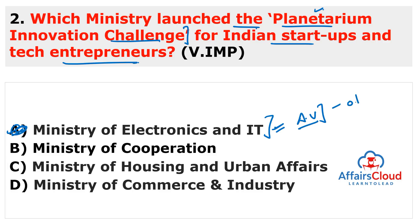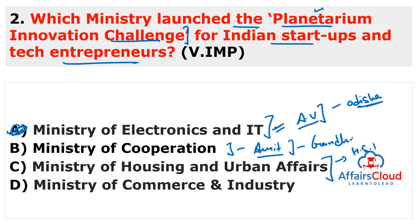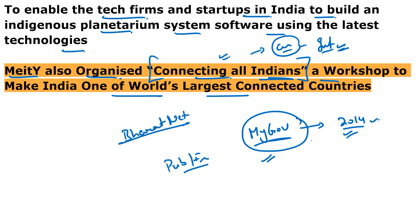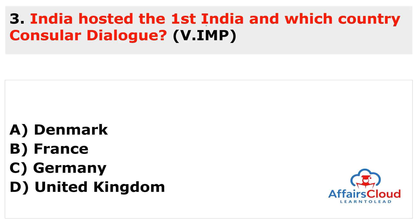Remember two things from the Ministry of Electronics and Information Technology: one is the Planetarium Innovation Challenge for startups, and second is the 'Connecting All Indians' workshop. The union minister is Ashwini Vaishnaw, currently a member of Rajya Sabha from Odisha. Ministry of Cooperation is a newly created ministry with Amisha as the first union minister, constituency Gandhinagar. Ministry of Housing and Urban Affairs is headed by Hardeep Singh Puri.